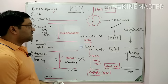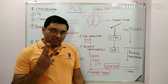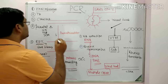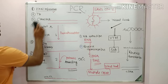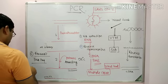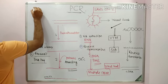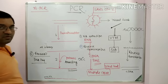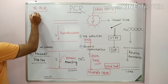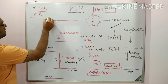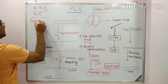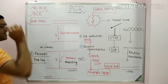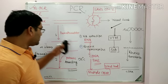In COVID-19 or SARS-CoV-2 detection, three main PCR techniques are used. First is RT-PCR, which means reverse transcription PCR. Second is conventional PCR. Third is real-time PCR, which is also referred to as RT-PCR. So RT-PCR, conventional PCR, and real-time PCR are all utilized here.